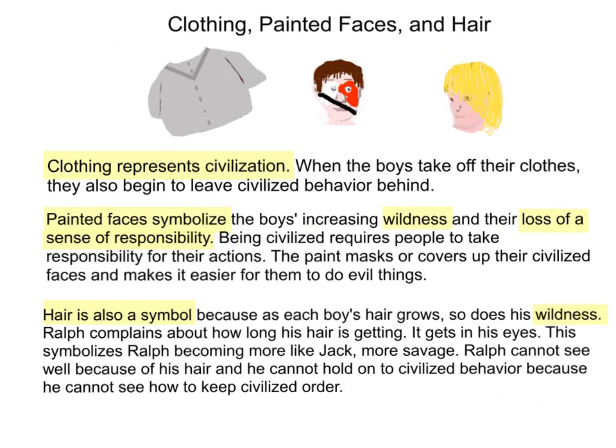Clothing, painted faces, and hair: Clothing represents civilization — when the boys take off their clothes, they also begin to leave civilized behavior behind. Painted faces symbolize the boys' increasing wildness and their loss of a sense of responsibility. The paint masks their civilized faces and makes it easier to do evil things. Hair is also a symbol — as each boy's hair grows, so does his wildness. Ralph complains about how long his hair is getting; it gets in his eyes, symbolizing Ralph becoming more savage and losing his ability to maintain civilized order.